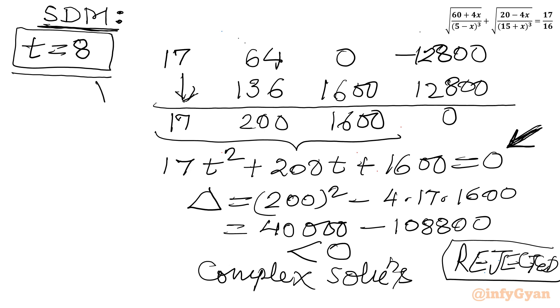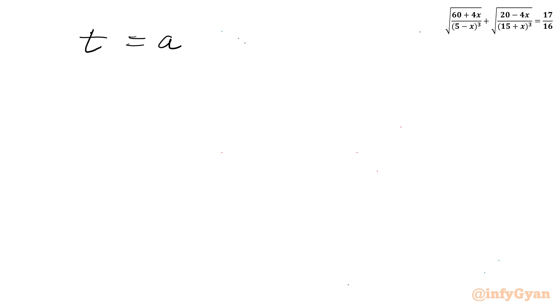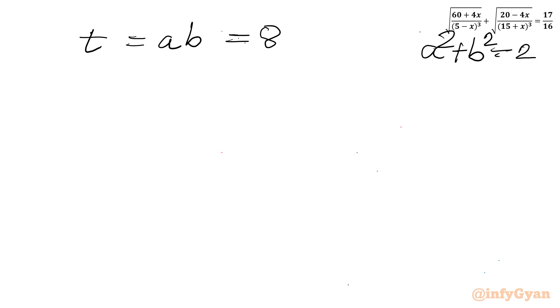So t equal to 8 is accepted only. What was t? It was our substitution: t equal to ab equal to 8. And our first equation was a squared plus b squared equal to 20. So from this equation I write b equal to 8 over a, and this value I will apply. So a squared plus (8/a) squared equals 20, giving a to the power 4 minus 20a squared plus 64 equal to 0. This is a quadratic equation in a squared.